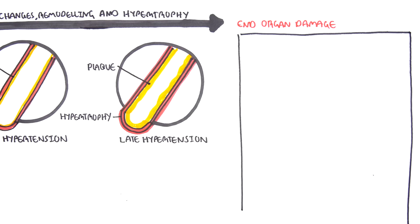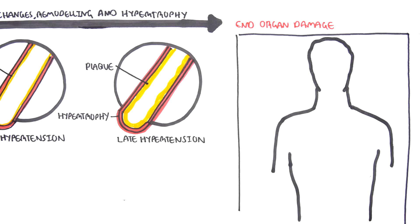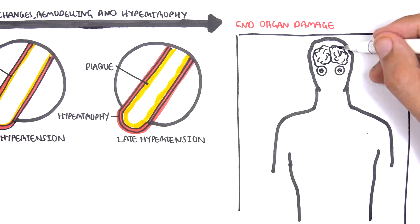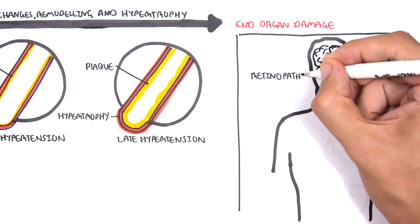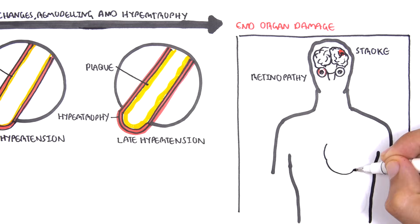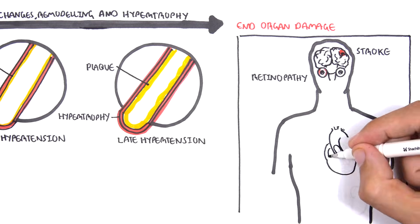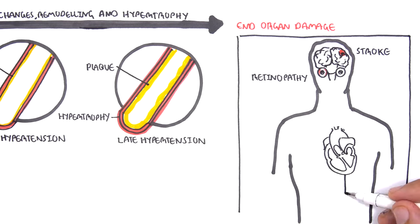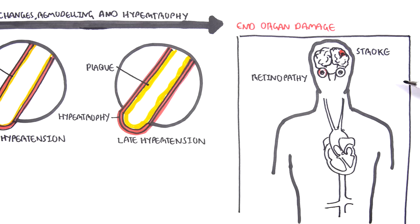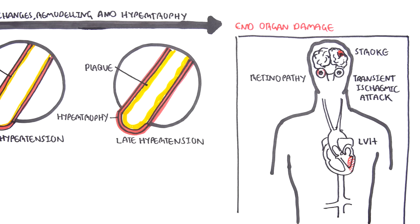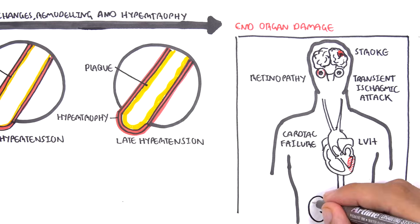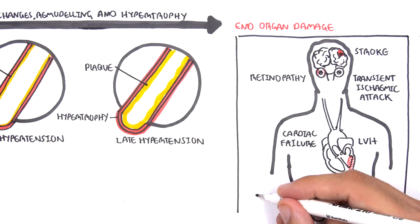These vascular changes can eventually result in end-organ damage, which includes stroke, retinopathy, transient ischemic attack, left ventricular hypertrophy, cardiac failure, and renal failure.